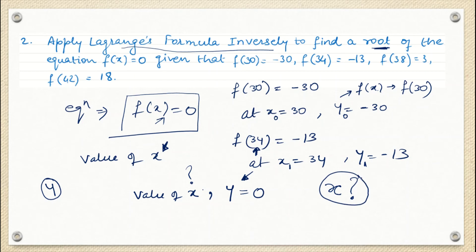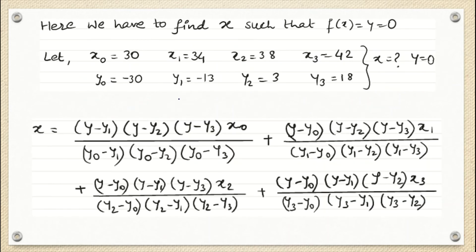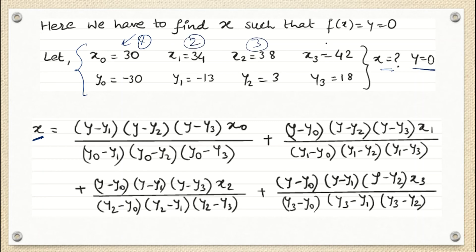Lagrange's inverse formula is written exactly the same way as Lagrange's interpolation formula — you just replace x with y. There are four data sets, so there will be four terms. In each term, you write (y - y_i) factors three times in numerator and denominator. For the first term: numerator (y - y1)(y - y2)(y - y3), denominator (y0 - y1)(y0 - y2)(y0 - y3), multiplied by x-naught.